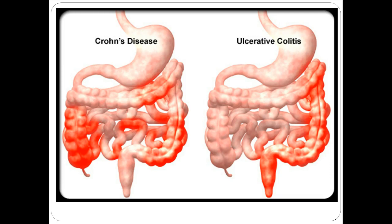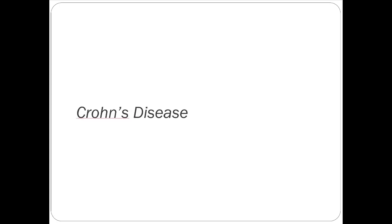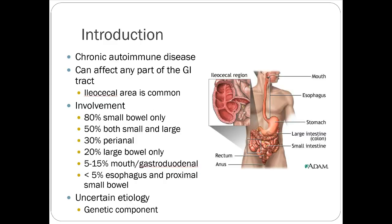Ulcerative colitis is the large bowel and the rectum only. Crohn's sounds a lot like rheumatoid arthritis because it's an autoimmune disease with a very similar treatment strategy. When we look at psoriasis, rheumatoid arthritis, and Crohn's, we're using a lot of the same medications — they're all autoimmune and we approach them very similarly.